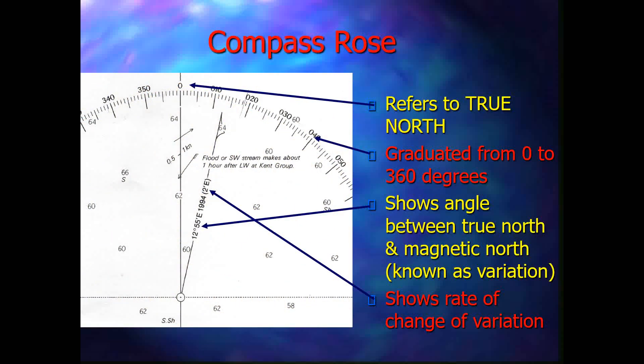The compass rose is there for direction keeping — you can plot directions using it. The zero reference refers to true north, not magnetic north, since we normally use true north for navigation and course plotting. The compass rose is graduated from 0 to 360 degrees. It also shows the angle between true north and magnetic north, known as variation. The variation for 1994 is provided, with an annual correction of 2 minutes east. East corrections are subtracted from the total variation, so you add the number of years from 1994, multiply by 2 minutes, and subtract from the stated variation.